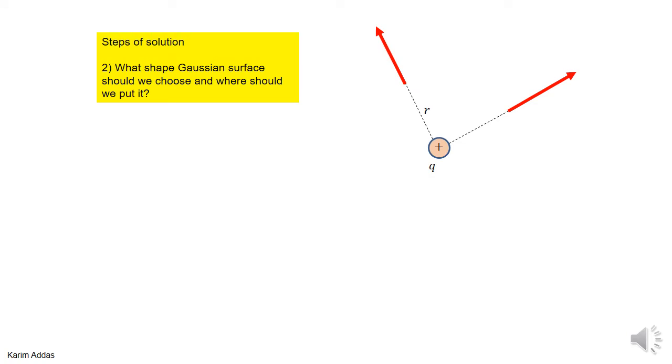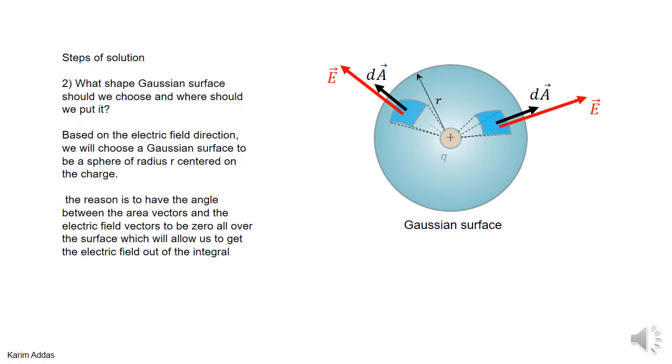Remember, Gauss's law doesn't tell you what shape the surface would be. Gauss's law is valid for any kind of shape. So you need to choose the shape yourself to fit the particular problem. So on what basis will you choose your Gaussian surface in this particular problem? I'm going to tell you that we're going to choose a sphere. And I'll show you why we're going to choose a sphere.